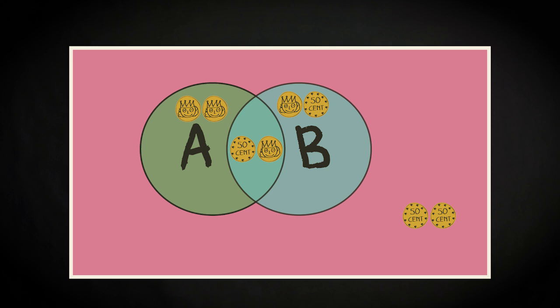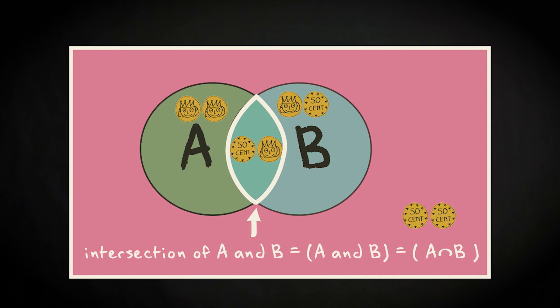The overlapping part of the two events is called the intersection. This is the shorthand for referring to the intersection of events A and B.